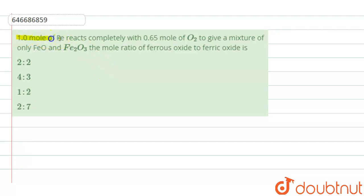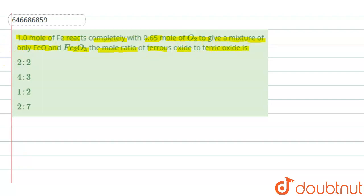One mole of Fe reacts completely with 0.65 mole of O₂ to give a mixture of only FeO and Fe₂O₃. We have to find the mole ratio of ferrous oxide and ferric oxide.